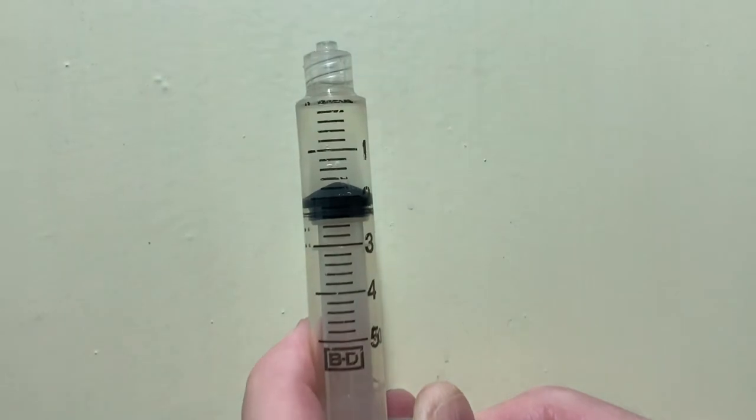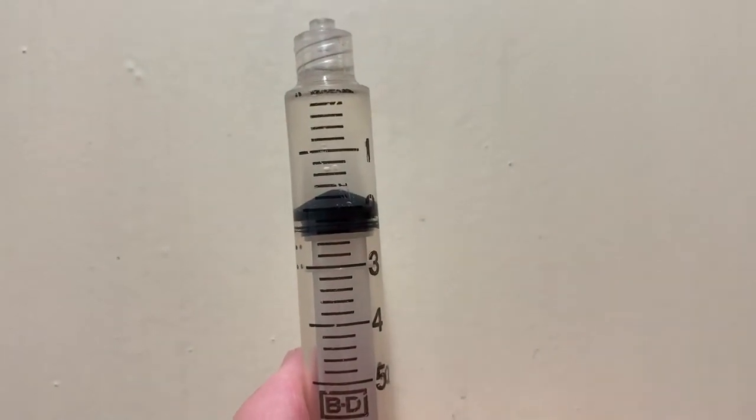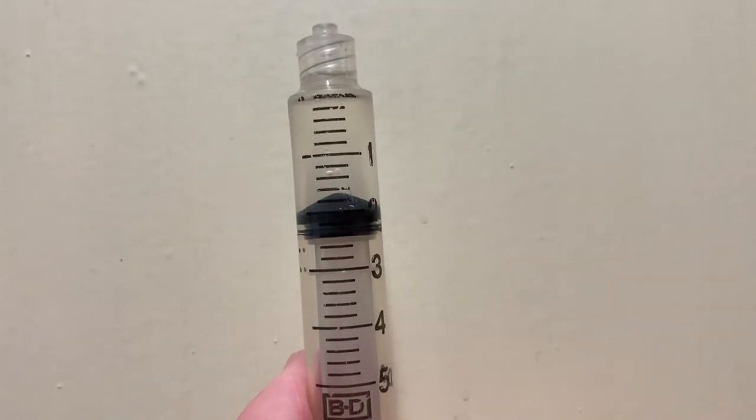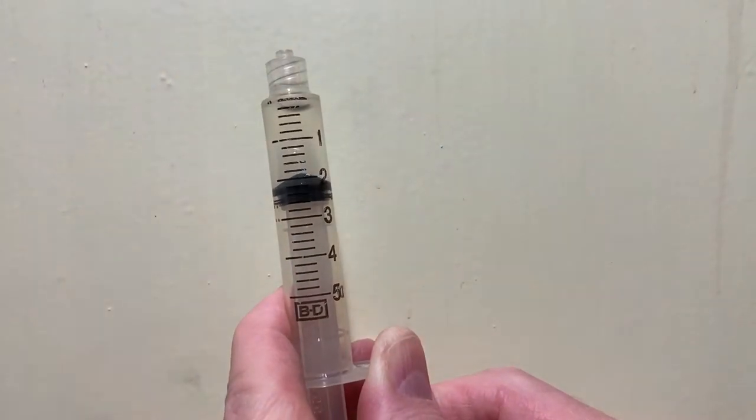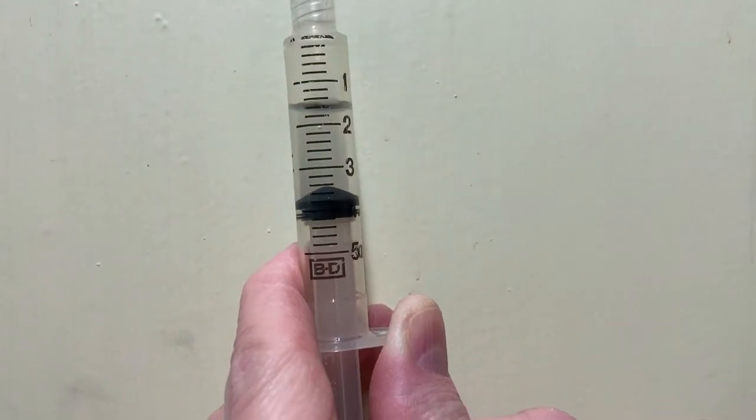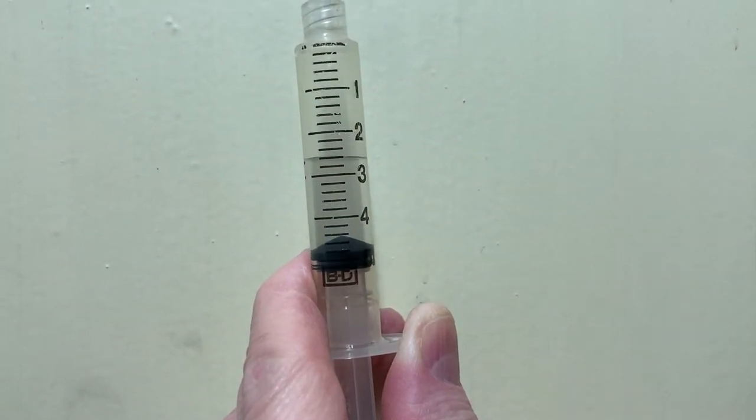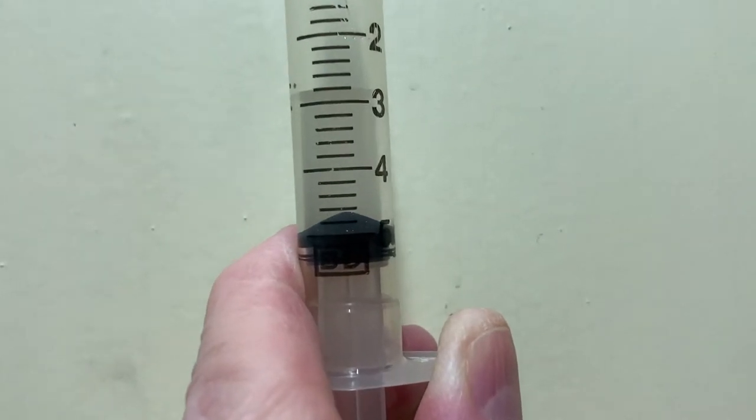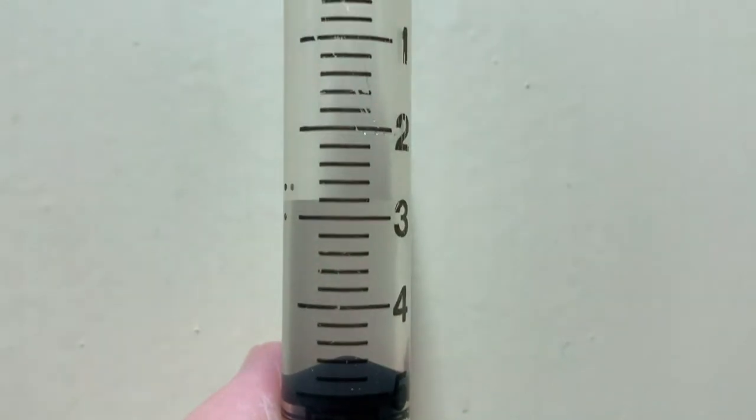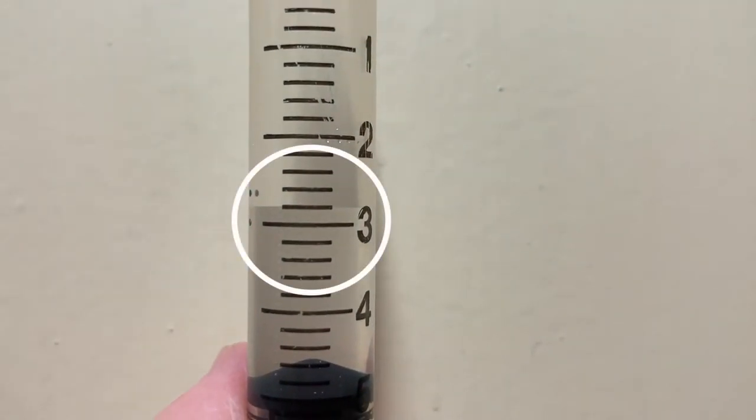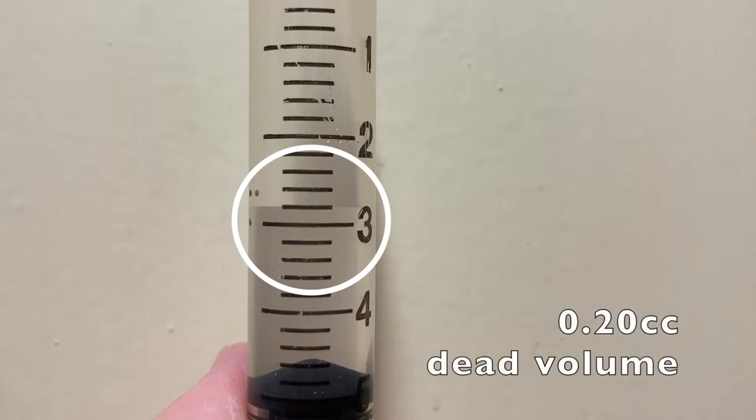To do this, we simply drew 2 cubic centimeters of water into the syringe, making sure to get rid of all air bubbles inside. Then we flipped the syringe upside down and drew the plunger back to 5 cubic centimeters. Since we initially drew 2 cubic centimeters of water into the syringe, we would expect that the water would now sit at 3 cubic centimeters, but it actually sits at 3.2 cubic centimeters, which tells us that there is a 0.2 cubic centimeter dead volume within the tip of the syringe.